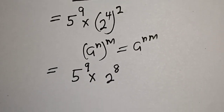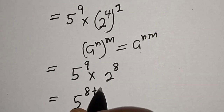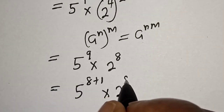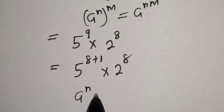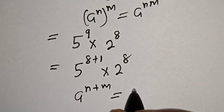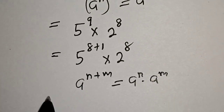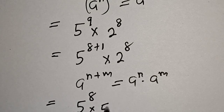This gives us 5 raised to power 8 plus 1, multiplied by 2 raised to power 8. Remember the rule that a raised to power n plus m is equal to a raised to power n multiplied by a raised to power m. So this becomes 5 raised to power 8 multiplied by 5 raised to power 1, multiplied by 2 raised to power 8.